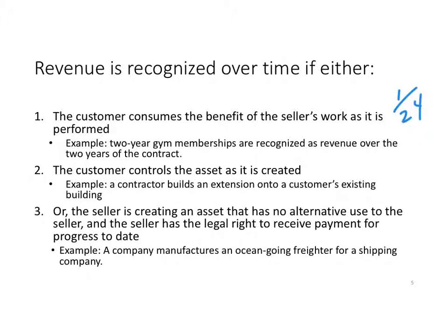If none of the three criteria are met — the customer can't consume the benefit of the seller's work until it's completed, the customer lacks control, or it doesn't meet the requirements for a long-term construction contract — then revenue cannot be recognized until the performance obligation is completely satisfied, which is usually at the end of the contract. If the time to completion is relatively short, a company might not even bother recognizing revenue over time even if allowed. For example, a lab running a test might take several days to complete and transmit results, but it doesn't make sense to allocate the lab fee over three days of analysis, so revenue would likely be recognized at a single point in time.